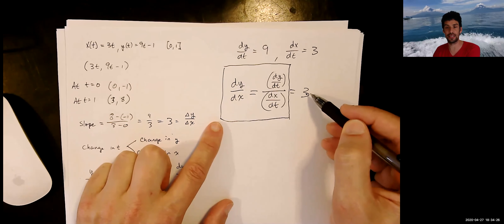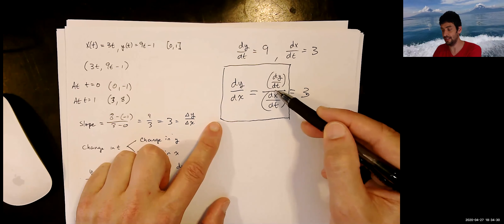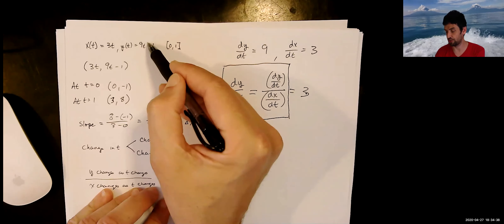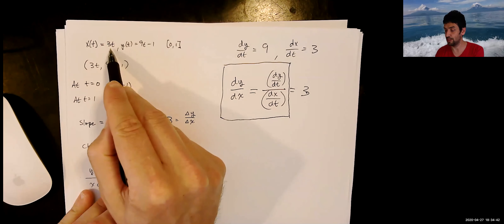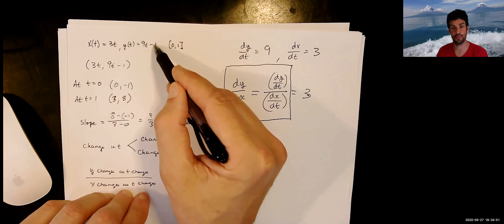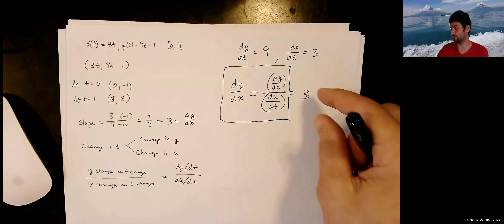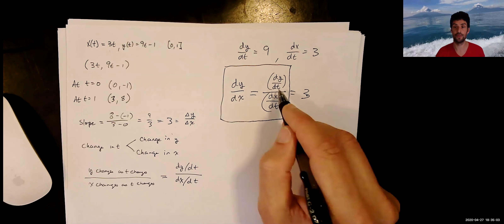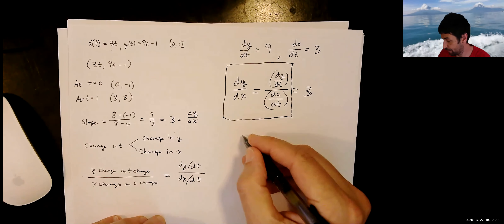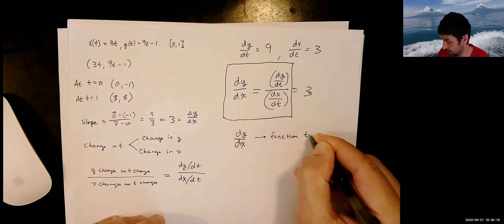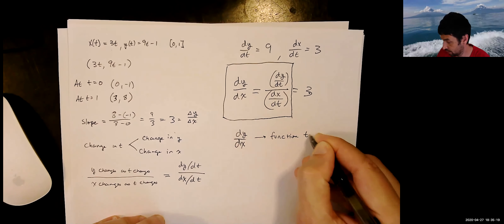The second derivative is a little more complicated. In this simple case dy/dx turned out to be a constant, but typically dy/dt is a function of t and dx/dt is a function of t. For example, if x were 3t squared, dx/dt would be 6t, and dy/dt would be 18t — resulting in a rational function. Generally, dy/dx is actually a function of t.